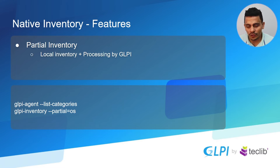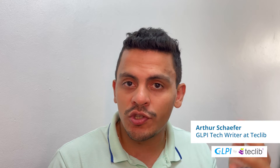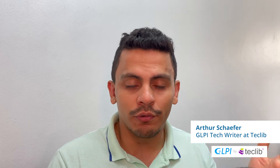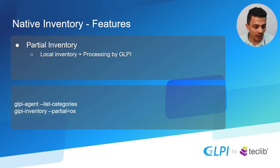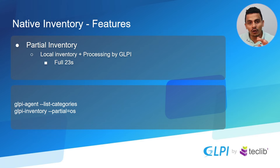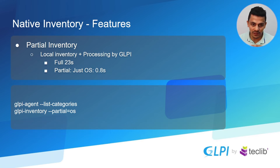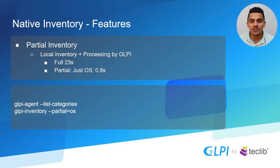As a new feature in the GLPI inventory, we have the partial inventory. It's for companies that have too many computers and just need to see what changes — for example, only the operating system, or just the firmware, or just the network of some computers. We can set partial inventories. For example, here we have a computer that takes about 23 seconds to do the whole inventory, but when we take just the OS information it takes only 0.8 seconds — less than one-twentieth of the time. So if we have many computers and just need to check the operating system, whether it changed or was updated, the partial inventory is very useful.